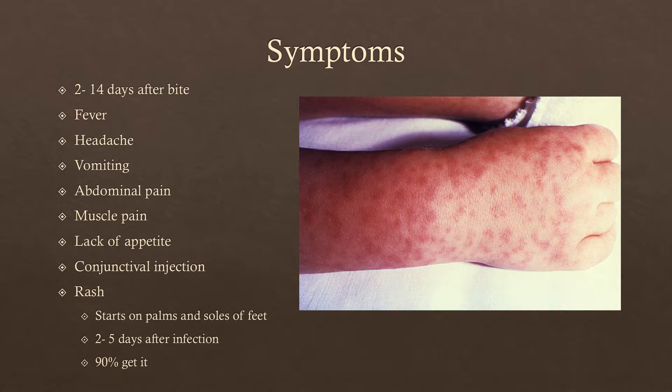That purple rash is why it was originally called the black measles, because the purple coloration looked black. If not treated by the sixth day when the rash turns dark, it can lead to severe brain damage, partial paralysis, kidney failure, heart failure, loss of hearing, meningitis, shock, and a number of other serious complications.